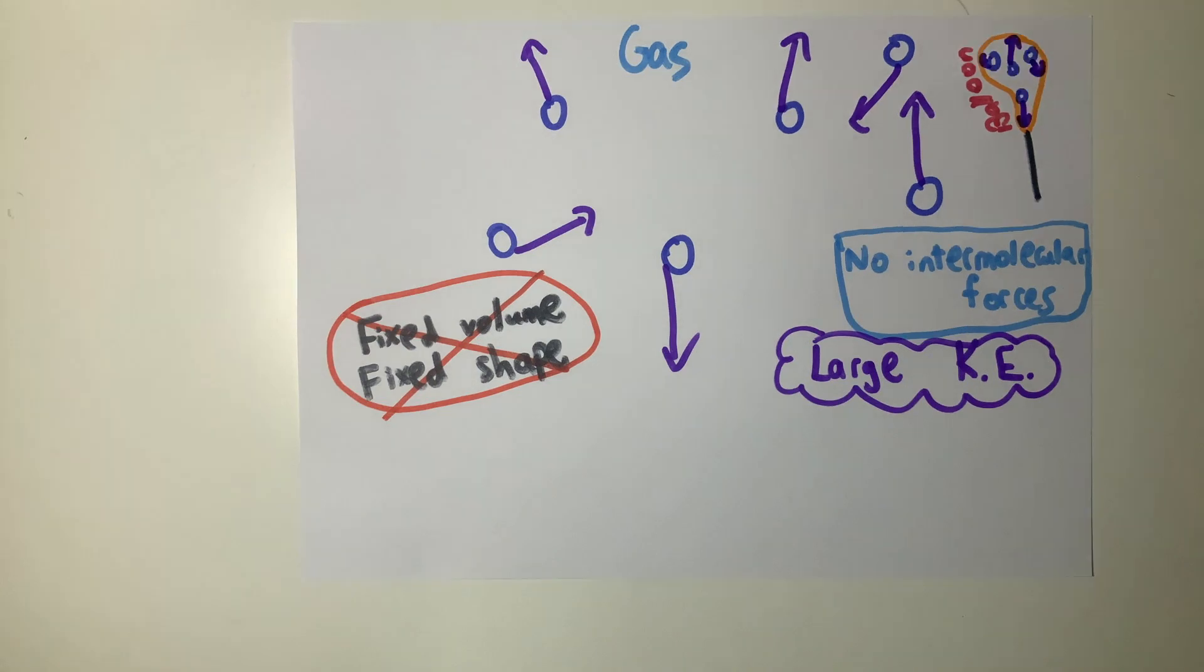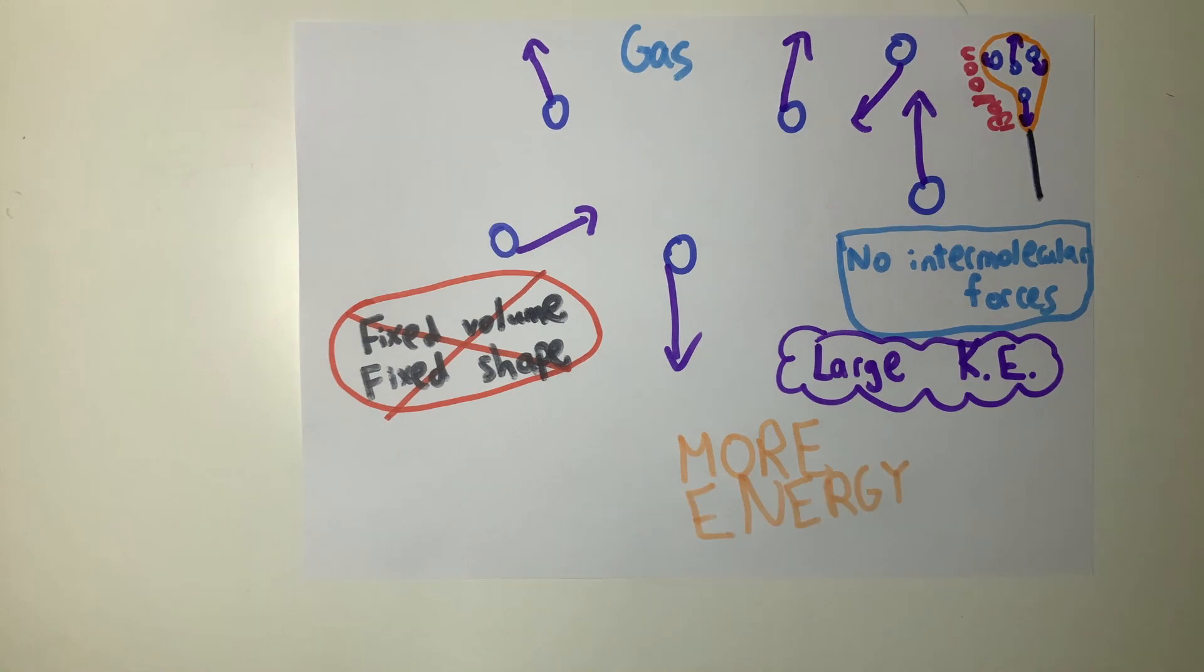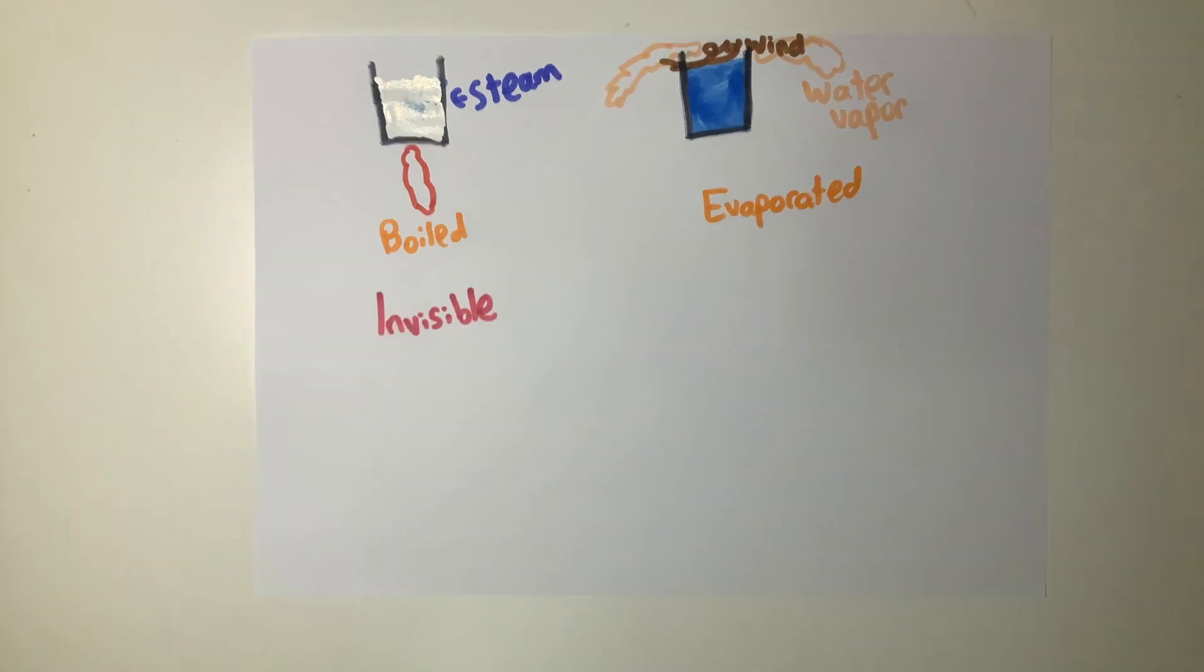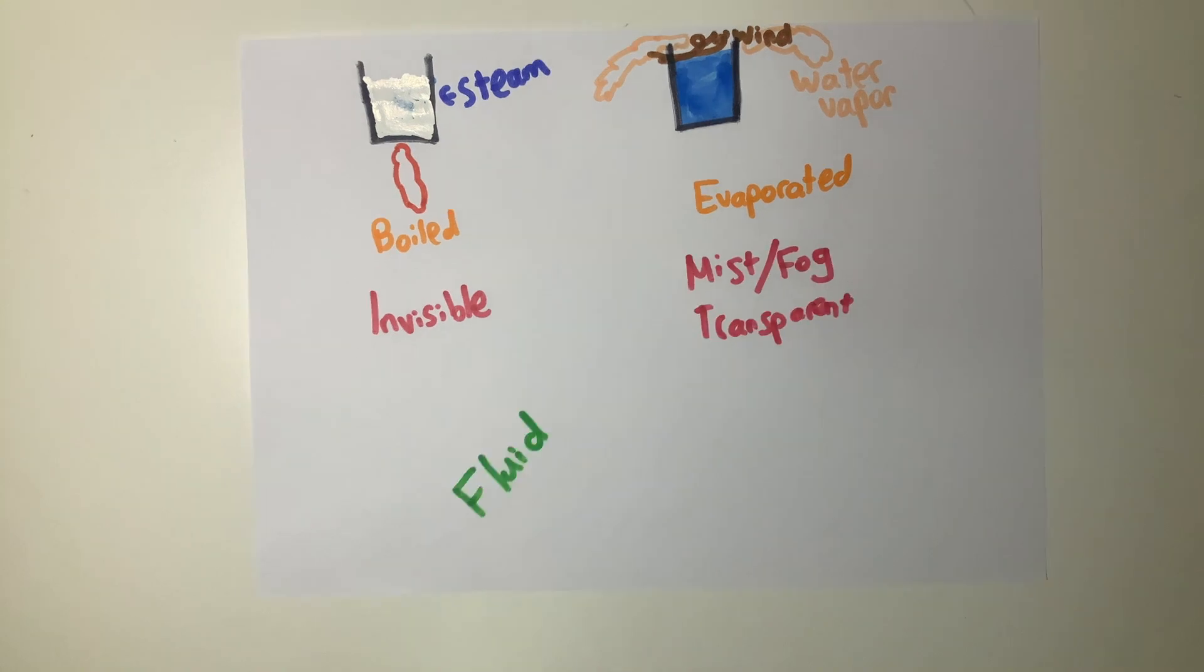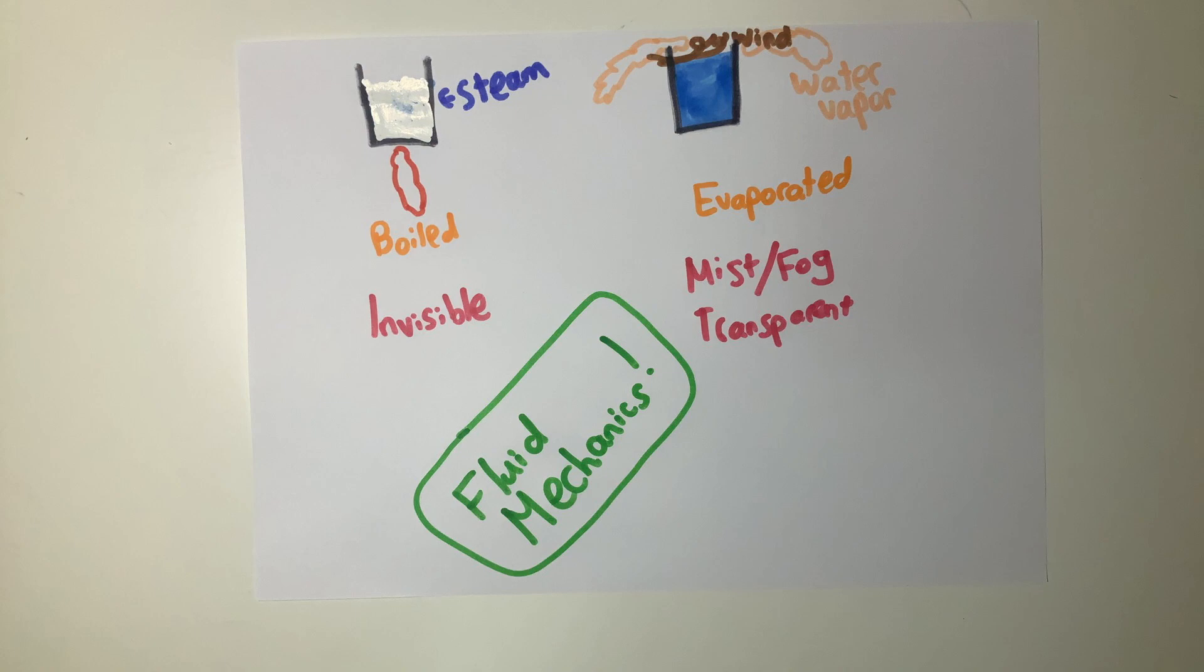Many people are tripped up on the difference between steam and water vapor. Steam is an invisible gas obtained by boiling water. However, water vapor is the gaseous form of water when liquid water is evaporated. Steam is an invisible gas while water vapor appears as mist and fog and is transparent. Gas is our key concept in fluid mechanics, which we will dive into soon.